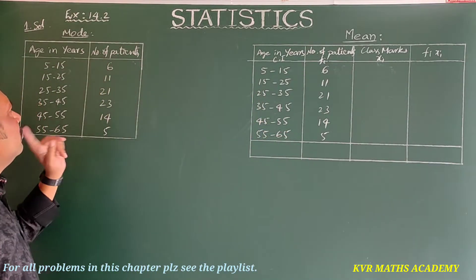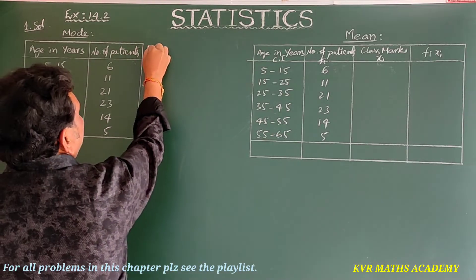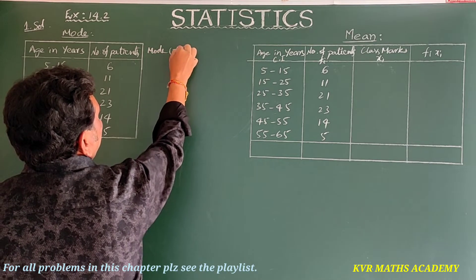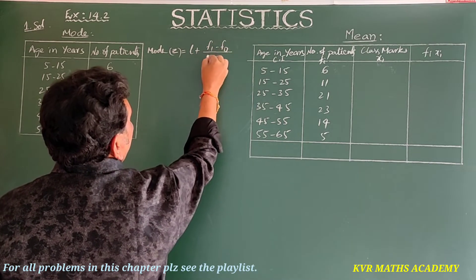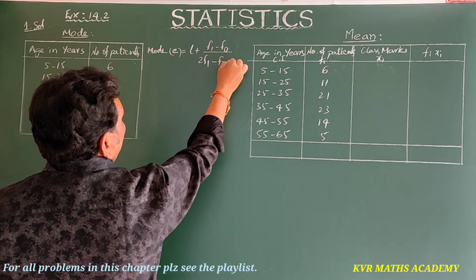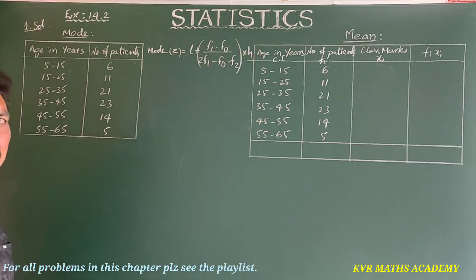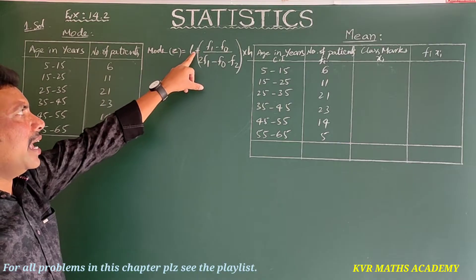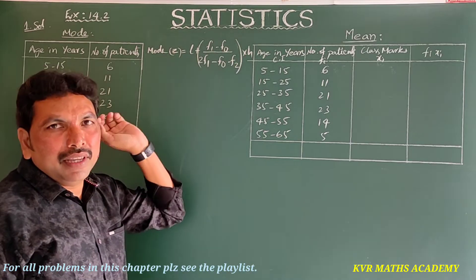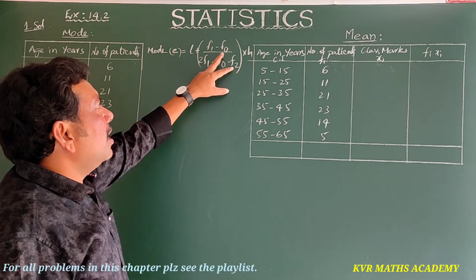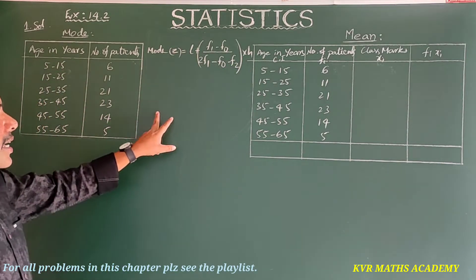First let's find the mode. The formula for mode is: Z = l + [(f1 − f0) / (2f1 − f0 − f2)] × h. Here f1, f0, f2, h, and l are values we need to identify from the table.